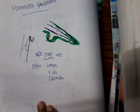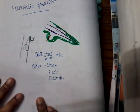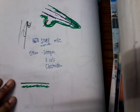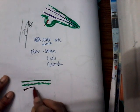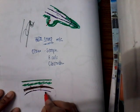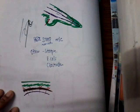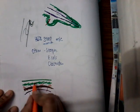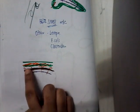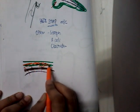Fournier's gangrene is a fulminating inflammation of subcutaneous tissue. In the scrotum, there is a dartos muscle and internal spermatic fascia, with cutaneous arteries supplying the scrotum. First, it causes infection of the subcutaneous tissue, and then this inflammation reaches the arteries.